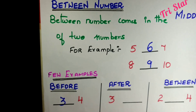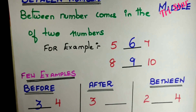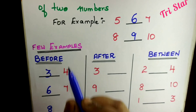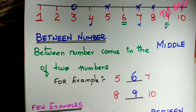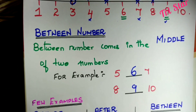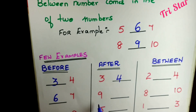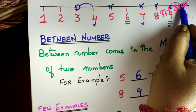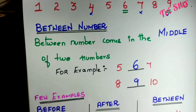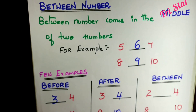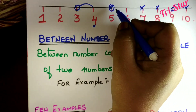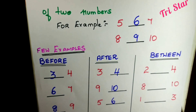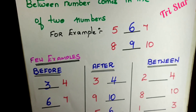Now let us look at the after numbers. After means the next number. What comes after 3? It is 4. Next: what comes after 9? It is 10. Next number is 5 — what comes after 5? It is 6.